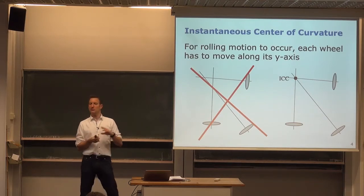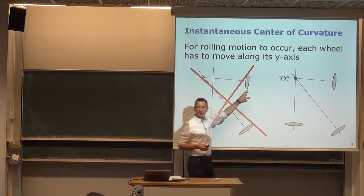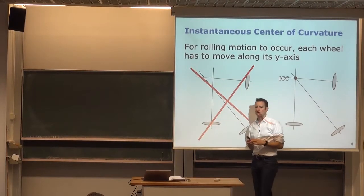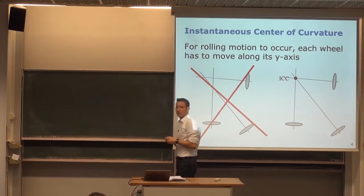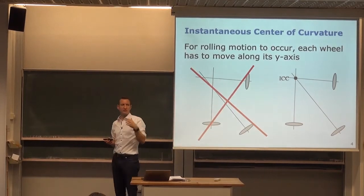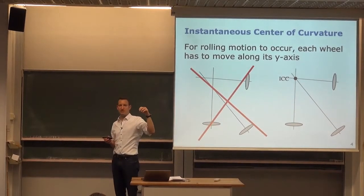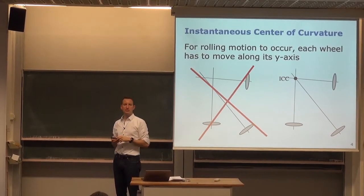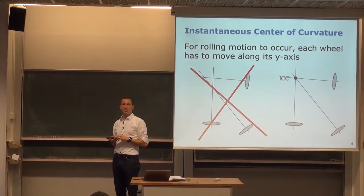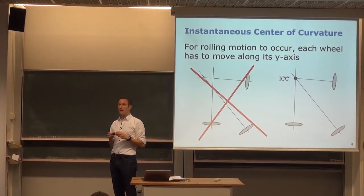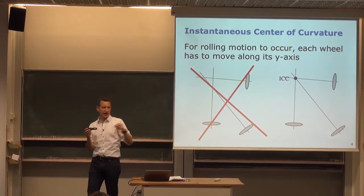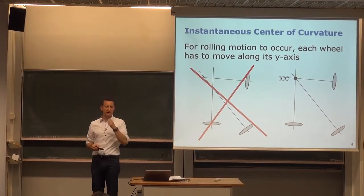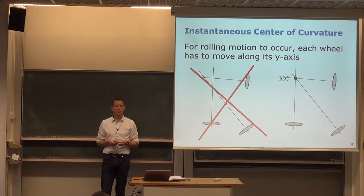So the idea of the ICC is: I want to drive on a curve, the motion must generate a circular arc, and there is one rotation center. If all the wheels are aligned so that their axes intersect at this rotation center, the motion will be smooth.